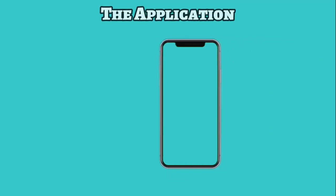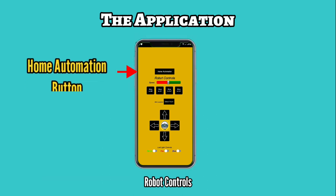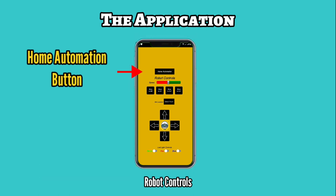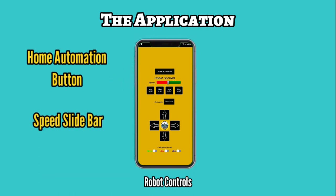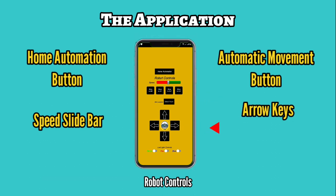ASRI is also connected to an Android application. Once you open the application, the first thing you will see is the different control buttons, the home automation button, a slide bar for the robot's speed, a set of buttons for automatic movement to other rooms, and arrow keys for manual control of the robot.